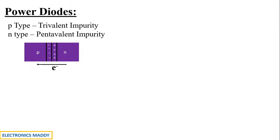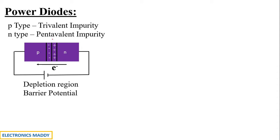As a result, we see some immobile ions formed across the junction. When supply is given, the supply voltage must be greater than this region so that recombination of holes and electrons takes place and current starts flowing. This region is called the depletion region, and the potential required to overcome it is called the barrier potential, also known as the knee voltage — the voltage required for the device to start conducting.